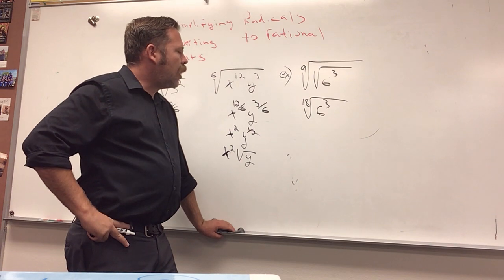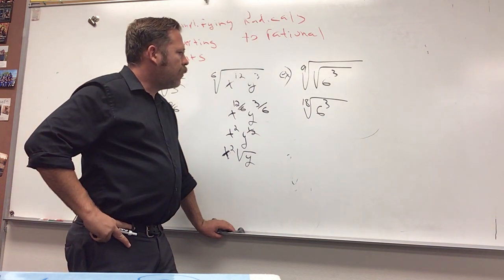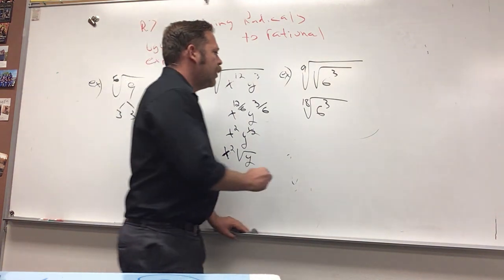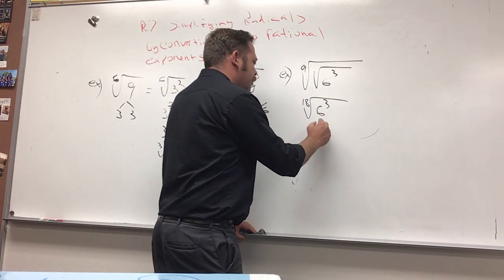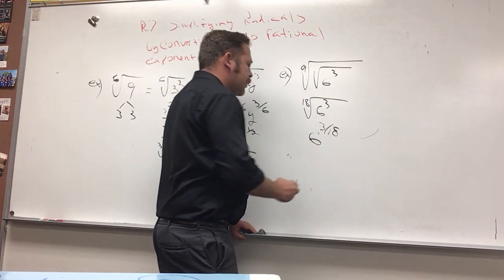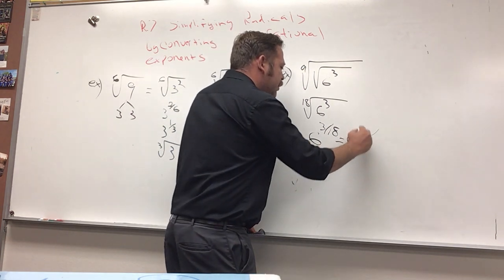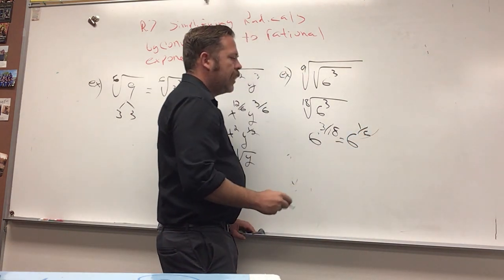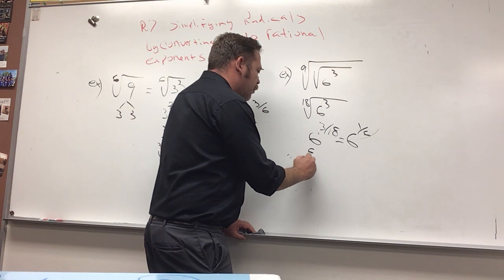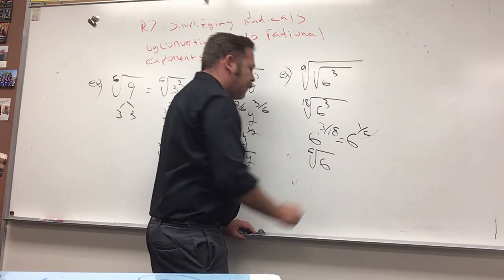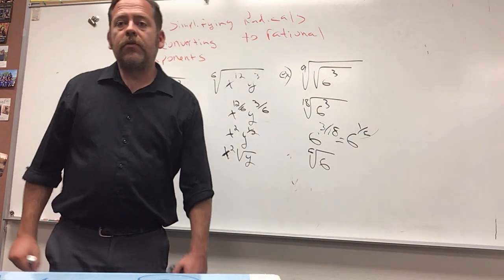Now, we can write it in a fractional form as six to the three eighteenths, which would then, if we simplify this fraction, that would be six to the one sixth. And then we would call it the sixth root of six to the first power, or just the sixth root of six.